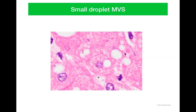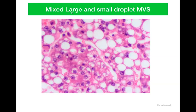In some cells, we have several of these small droplets, and at times these small droplets can also fill the cytoplasm. Generally, the nucleus is going to be central in small droplet steatosis, though it can also be eccentric. This type of small droplet macrovesicular steatosis is seen in hepatocytes and is less dangerous compared to large droplet macrovesicular steatosis, especially when assessing post-transplant biopsies. Sometimes we could see a mixture of both large and small droplet macrovesicular steatosis — some cells with large vacuoles and certain cells where multiple small droplets are filling the cytoplasm.